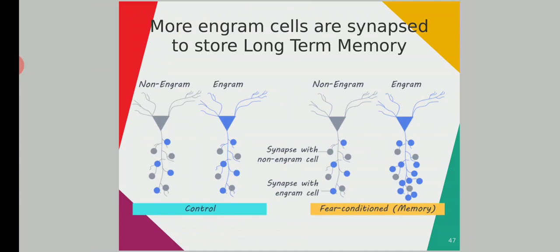More engram cells are synapsed to store long-term memory. In the left panel is the normal state; the right panel is the memory state. The blue neuron is the engram neuron. When we are increasing the memory, we are synapsing a higher number of engram cells to the engram neuron in order to create long-term memory. First there is an engram neuron, then a higher number of engram memory cells are synapsed with it. Engram is the key thing.